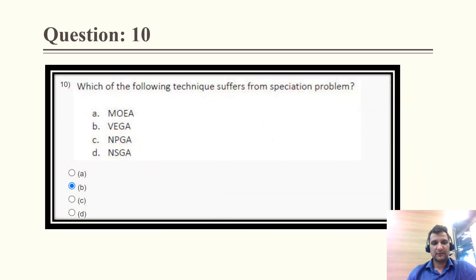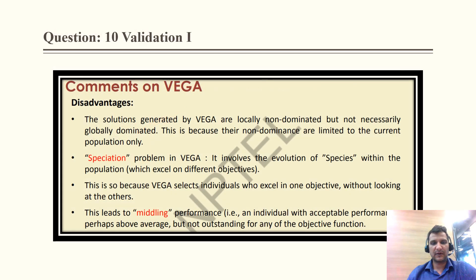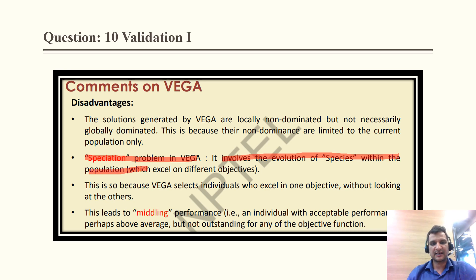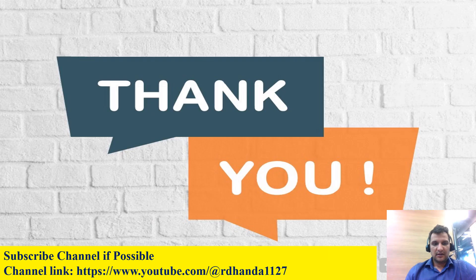Question 10: which of the following techniques suffers from the speciation problem? VEGA is the one that suffers from the speciation problem. The validation: the speciation problem in VEGA involves the evolution of species within the population that excel on different objectives.